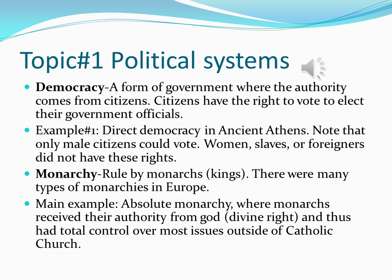There are several political systems that you need to know for your global regions. The first one is democracy, which is a form of government where the authority comes from citizens. Citizens have the right to vote to elect their government officials. Example number one: direct democracy in ancient Athens. Note that only male citizens could vote. Women, slaves, or foreigners did not have these rights.